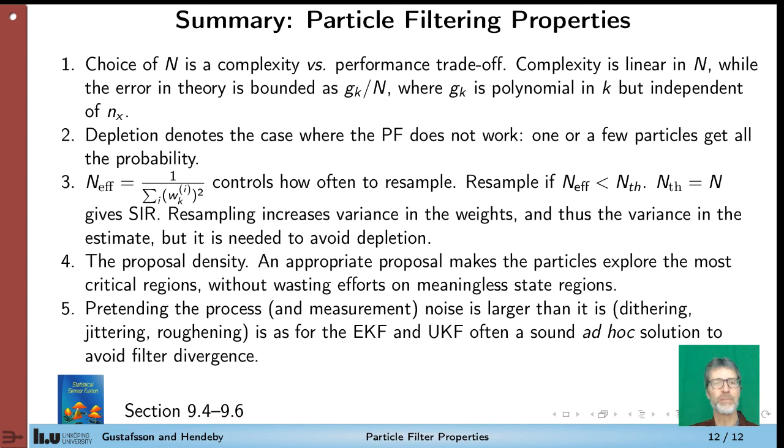The proposal density is maybe the trickiest part and the theoretically most advanced feature of the particle filter. So normally you pick the prior to be the proposal but you can also choose the likelihood or actually any combination between them. If you are lazy or just want a quick and dirty solution you can apply dithering which means that you increase the process and/or the measurement noise in the filter to be larger than it is by physics. That is a trick that also works for the extended Kalman filter and the unscented Kalman filter and it's a kind of sound ad hoc solution to avoid filter divergence.